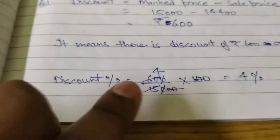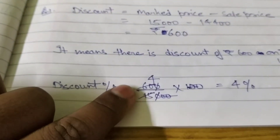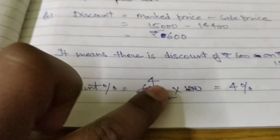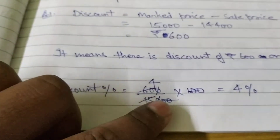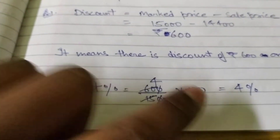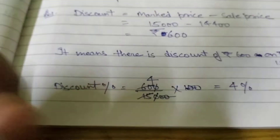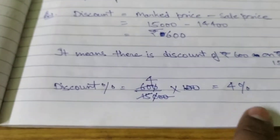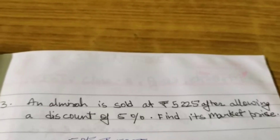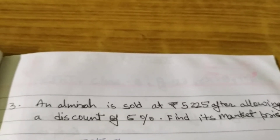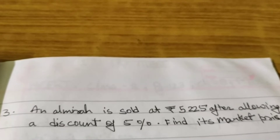Discount percent equals discount upon marked price multiplied by 100. That is 600 divided by 15,000 multiplied by 100, which gives 4 percent discount. So the discount percent is 4%.